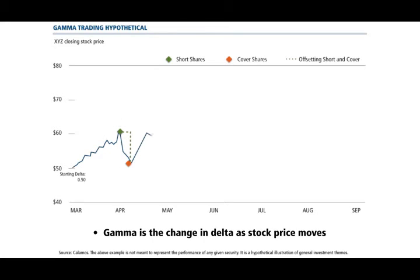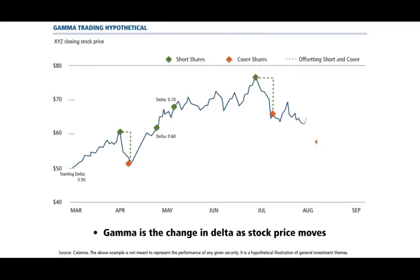As we move forward, we can see the stock price rises again. Once again, we short some additional shares to get back to our heavier hedge. This time, though, after our short, the stock price continues to move higher. As we move on, we continue shorting and covering as our delta changes, with each buy closing out a corresponding short.